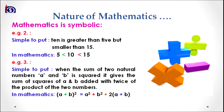Look at example two on your screen. There is a statement: '10 is greater than 5 but smaller than 15.' When converted into a mathematical expression using less-than and greater-than symbols, it becomes 5 < 10 < 15. This expression makes the statement more clear, precise, and comprehensible in nature.